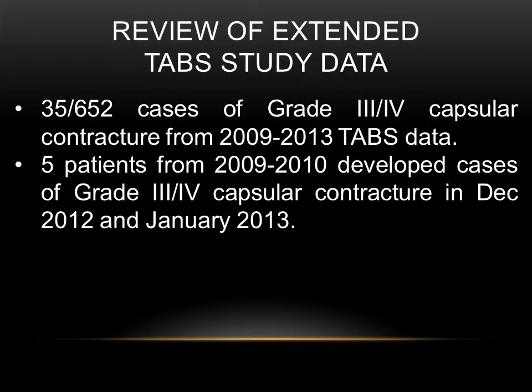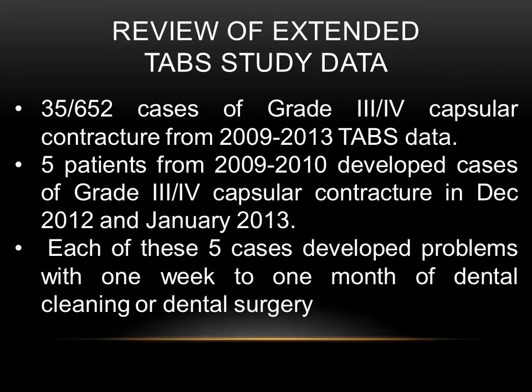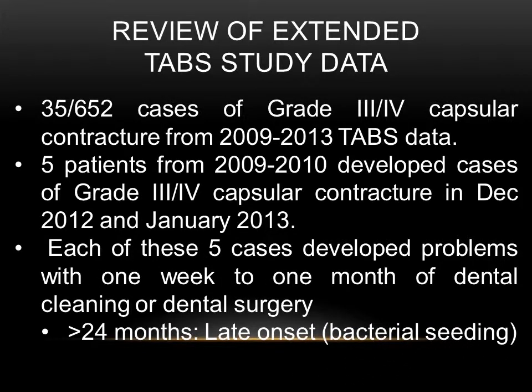A review of the extended TABS data showed the following: 35 out of 652 cases of grade 3 or grade 4 capsular contracture occurred between 2009 and 2013. Five patients from the 2009–2010 period developed grade 3 or grade 4 capsular contracture in December 2012 or January 2013. Each of these five cases developed problems within one week to one month of a dental cleaning or dental surgery. This corresponds to a late-onset bacterial seeding infection of greater than 24 months, supporting the hypothesis of a dental cavity infection rather than an incisional infection.